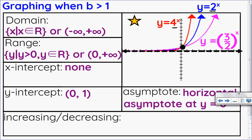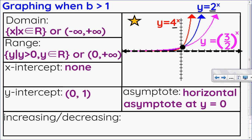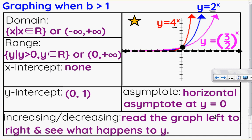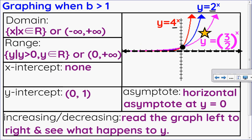Am I increasing or decreasing? To know that I read the graph from left to right and focus on what's happening with y. As I read these graphs from left to right, y is getting bigger for each one. So since y is getting bigger I can say this is an increasing graph. When the base is greater than one, those are all of its properties, and I have increasing graphs.